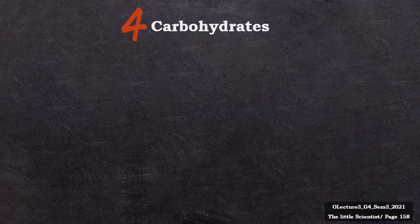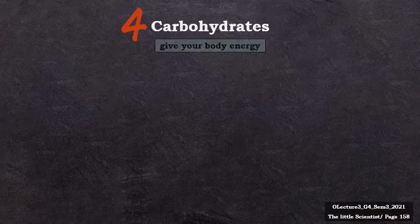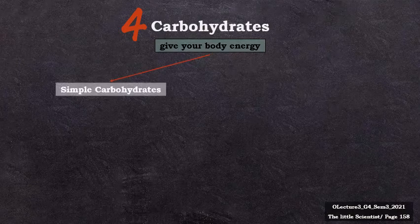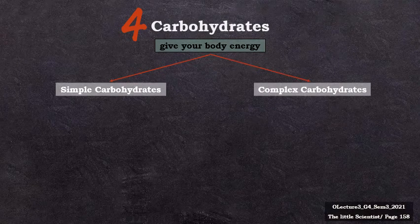So we know now that we need protein-based food to grow, and we need protective food rich in vitamins to stay healthy. But don't you want to live and to be active? So you need energy! And here are the carbohydrates. Carbohydrates are the body's most important source of energy and they are a necessary part of a healthy diet. The two main forms of carbs are simple carbohydrates or simple sugars, and complex carbohydrates or starches.